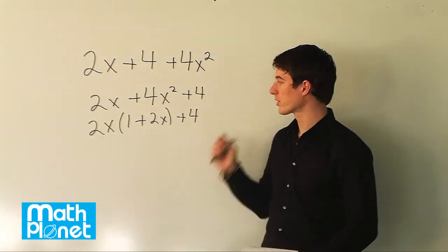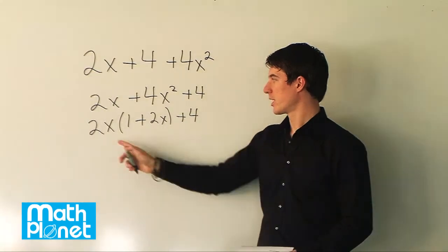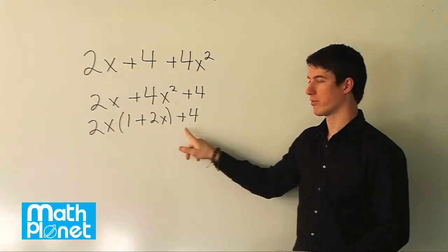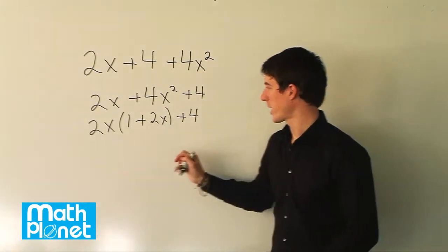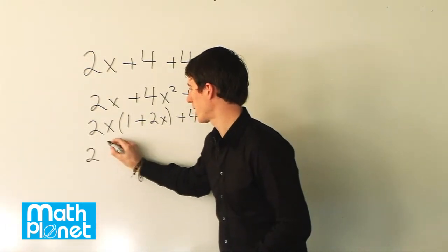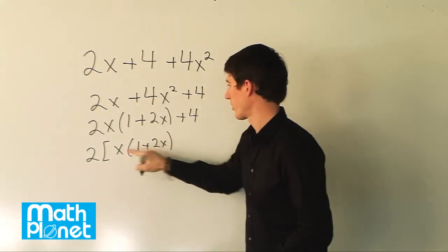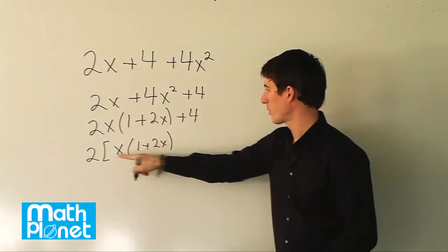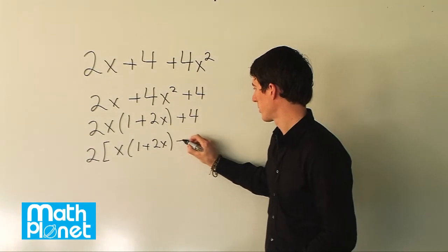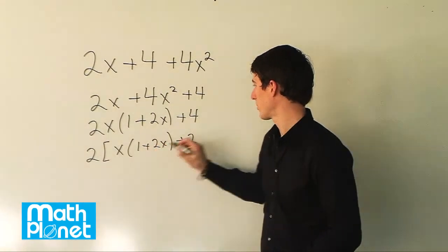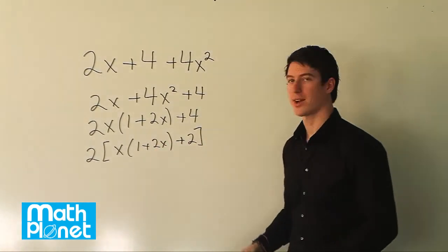Now if we want we can do one more step and factorize it just a little bit further. We can see that there's a 2 in both of these factors. So we can write this as 2 times bracket x times (1 plus 2x). So this is the same with this 2. And now we factor the 2 out of the 4, so we say plus 2 because 2 times 2 is 4.